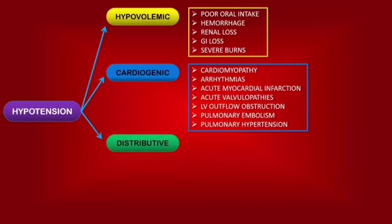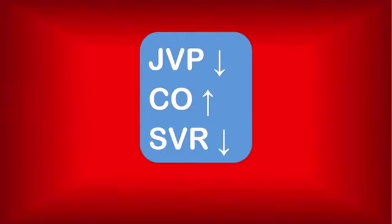For distributive hypotension, the pathologies we will mention have the negative impact of increasing peripheral vascular permeability with systemic vasodilation and an impairment of control over vascular resistance. What we mean is that the body will be unable to redirect blood to where it is needed — the blood will no longer be distributed according to the body's needs, hence the name distributive. In terms of hemodynamics, the jugular venous pressure will be reduced due to low venous return, the cardiac output will be increased due to tachycardia as compensation for the reduced preload, and the systemic vascular resistance will obviously be reduced.